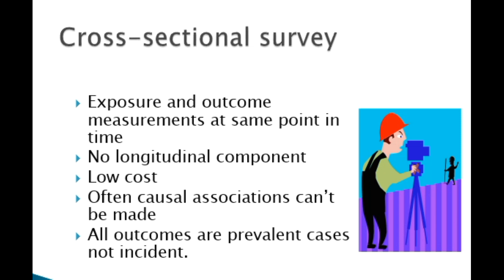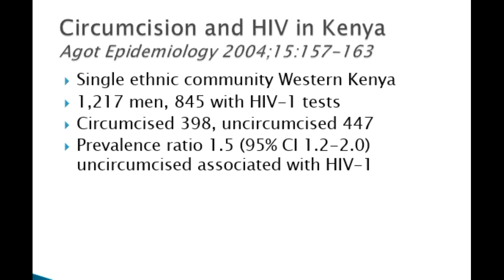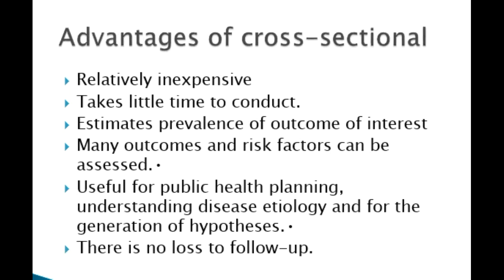The number of people with the disease is referred to as prevalent cases — that is, a proportion of people with the disease or the outcome at that specific point in time. This is an example of a cross-sectional study that is one among the studies that led to a policy change supporting the reasoning that male circumcision decreases the prevalence of HIV transmission. In this study, a total of 1,217 men participated, with 398 of them having had circumcision. The results showed that those who had no circumcision were 1.5 times more likely to have HIV.